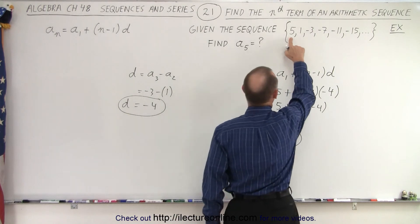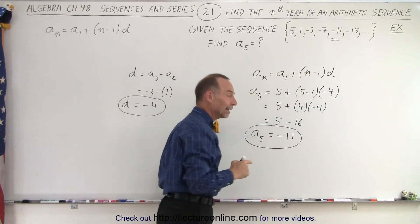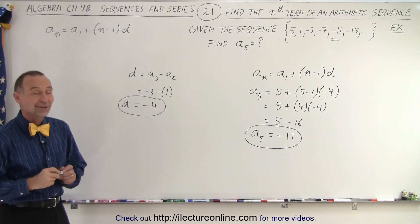Now let's check it out. We have 1, 2, 3, 4, 5. Sure enough that's the value we got. We got the correct value and that is how it's done.